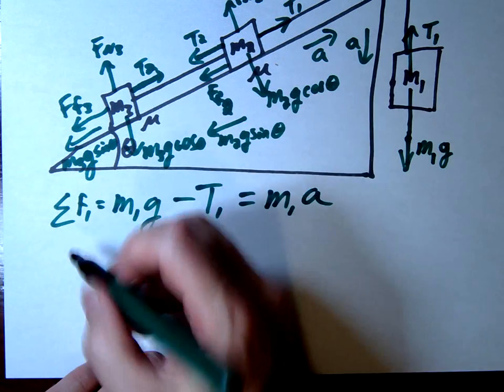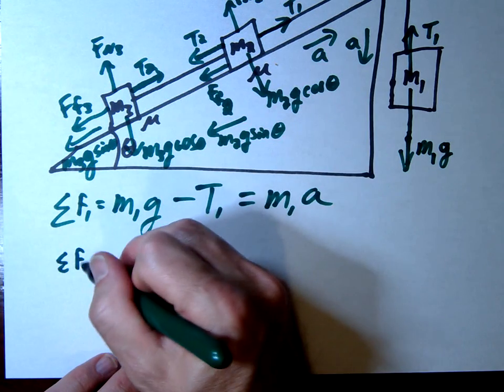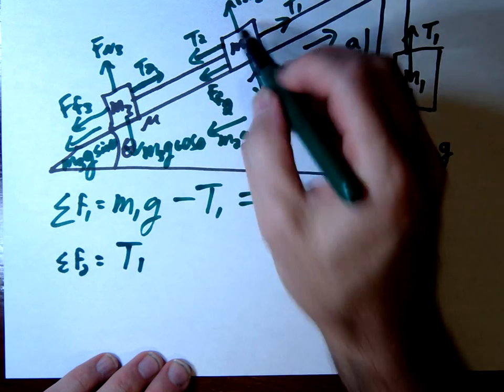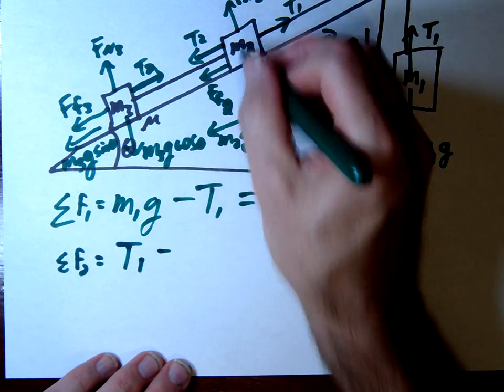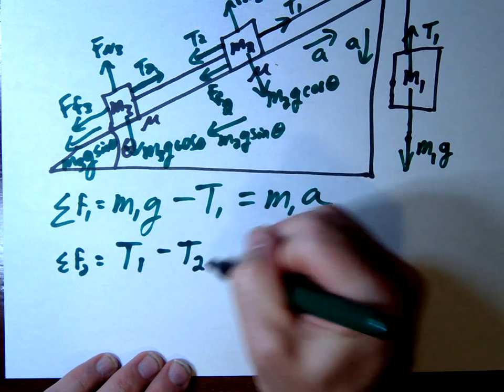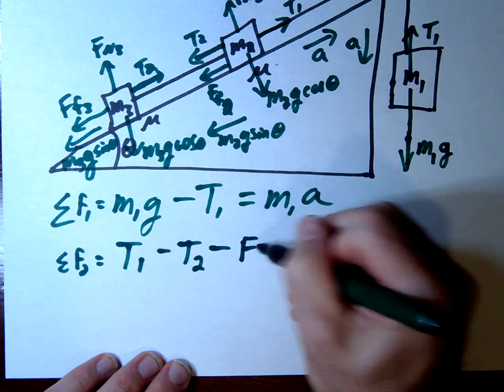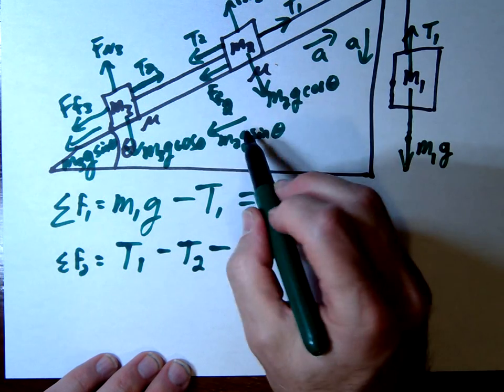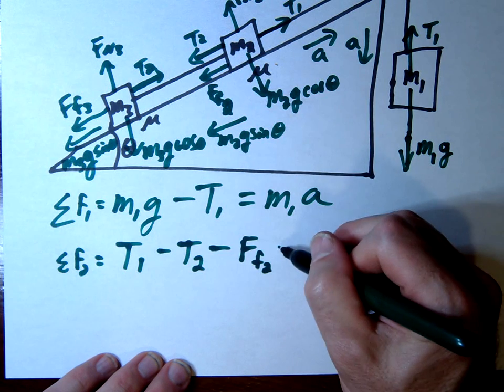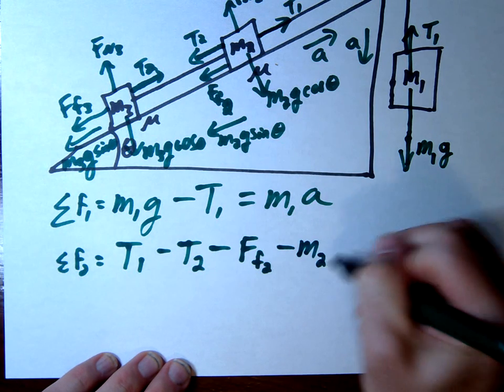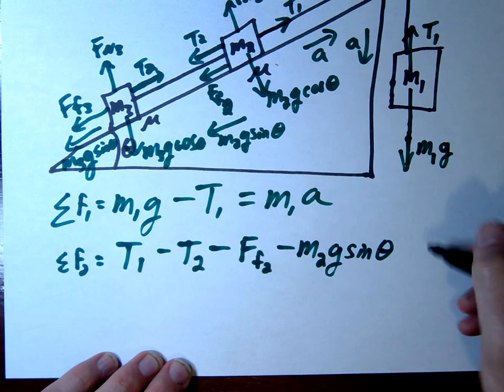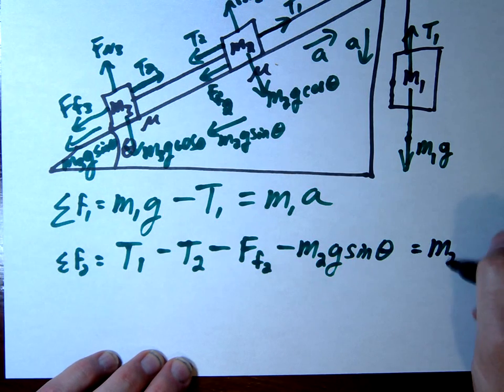We'll do the second mass, sum of F2. So this one's going to have a lot of forces. We have T1 is the positive going up. Then we're going to subtract T2 going down. We're going to subtract this friction here FF2 coming down. And then don't forget about this piece coming down here. Subtracting M2G sine theta. That's going to equal M2A.